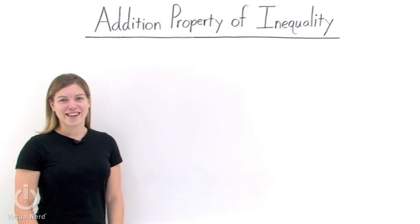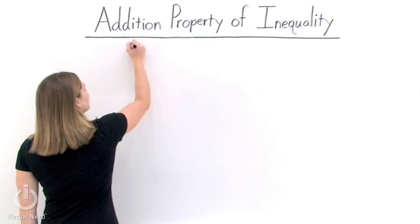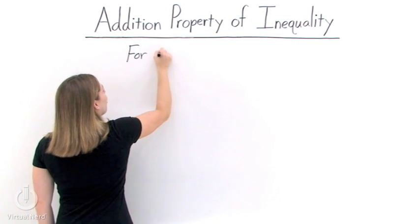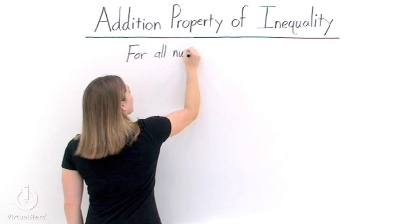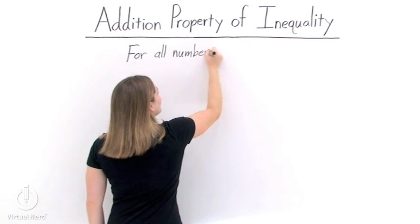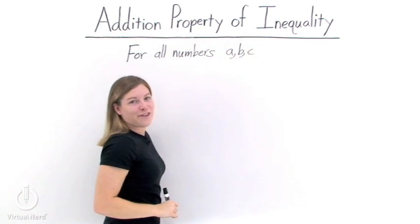The addition property of inequality. This property states that for all numbers a, b, and c, we have the following.